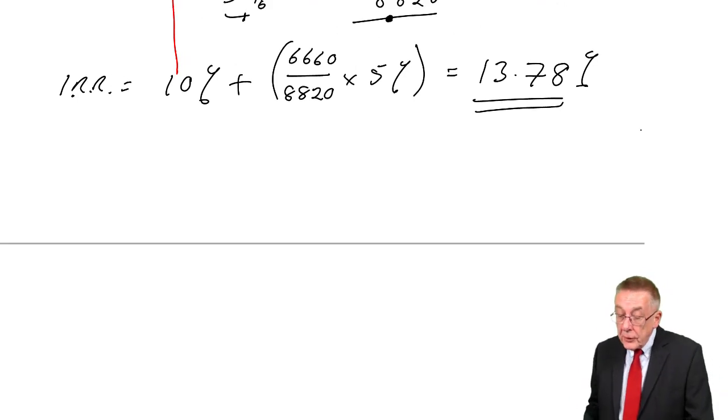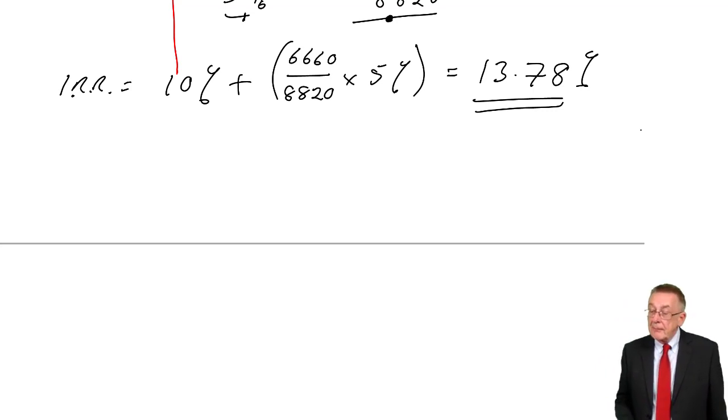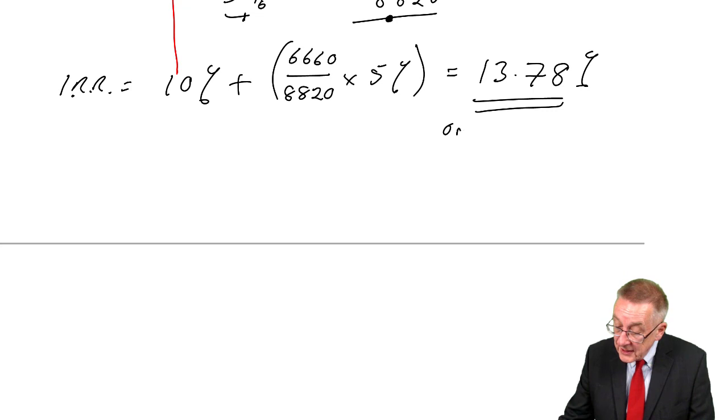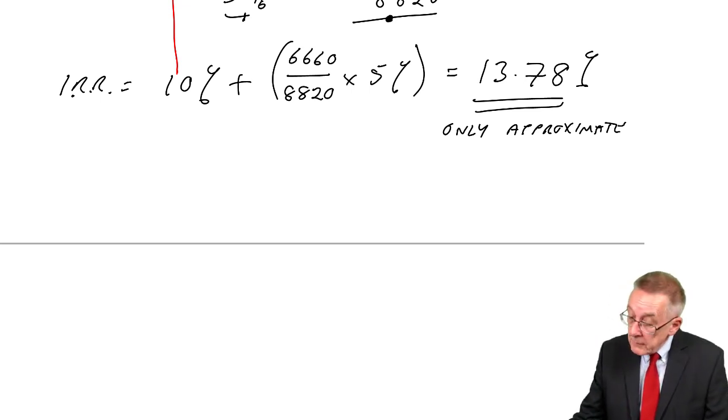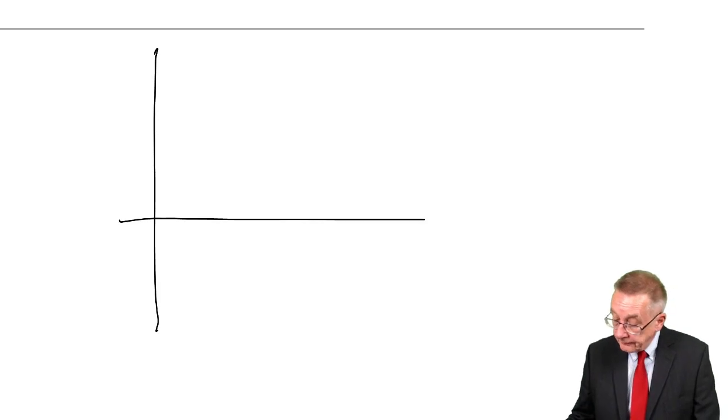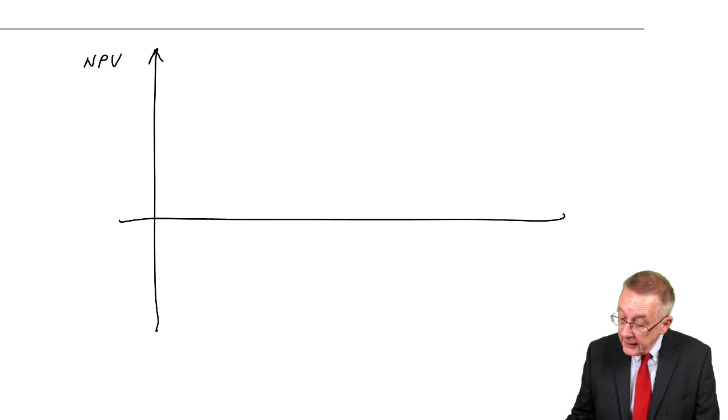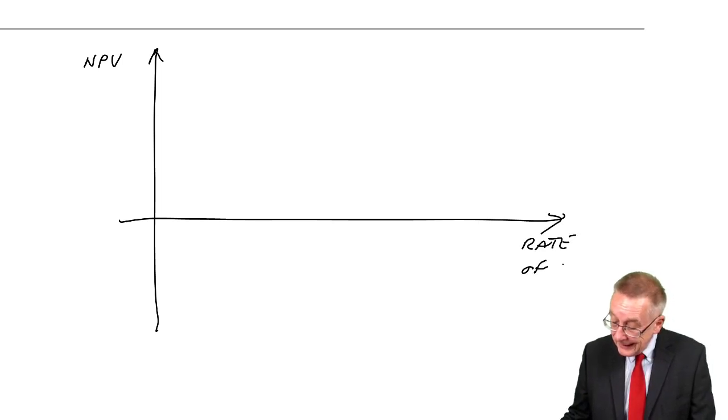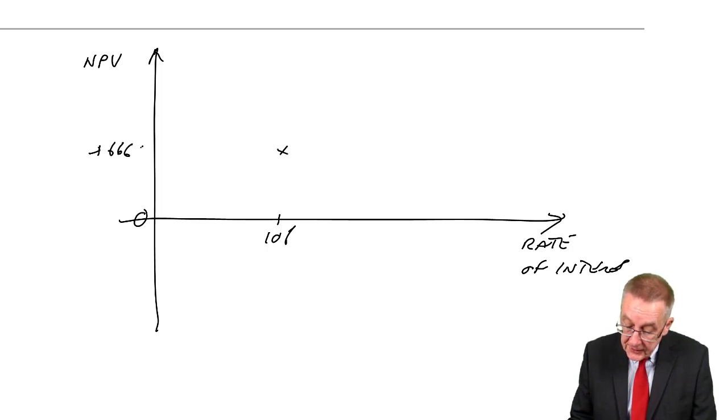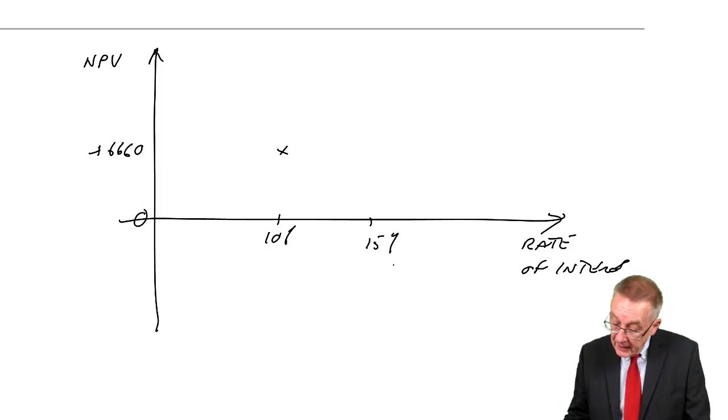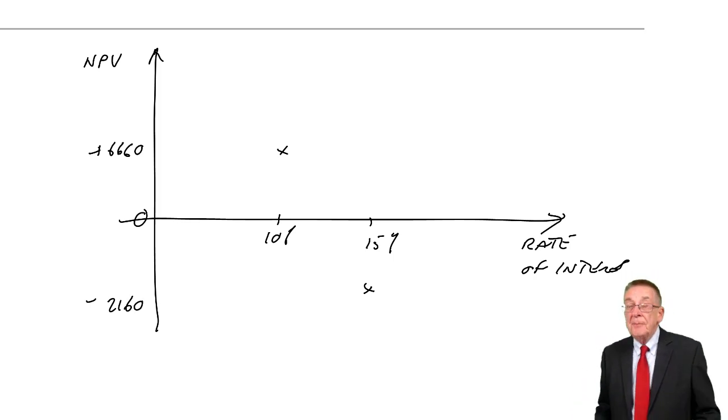Secondly, although generally speaking we leave the internal rate of return to two decimal places, in fact, it's only an approximation. It's only approximate. And the reason is that if I drew a graph of the NPV as against the rate of interest, we did 10% and we got plus 6,660, and then did 15% and we got minus 2,160.